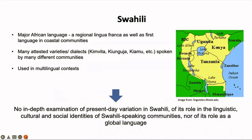Swahili is a major African language and a regional lingua franca across much of East Africa, as well as a first or primary language — though the terminology is a bit contested — amongst coastal communities, particularly traditionally or historically. There are numerous varieties or dialects attested and spoken by different communities, and this is actually already one of our methodological challenges. There are named varieties or dialects such as Kimbita, Kinguja, Kiyamu and many more, which have been described, and there's a long history of work on those dialects.